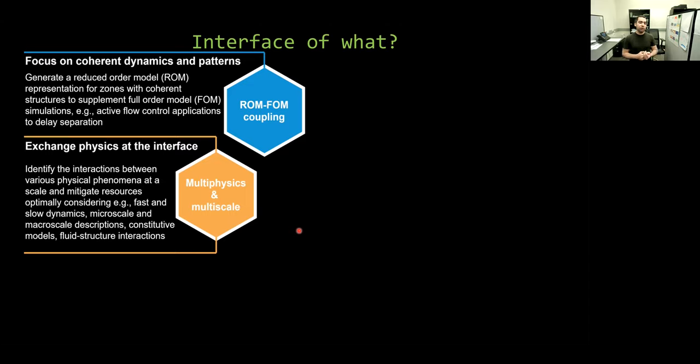The first is ROM-FOM coupling. As I mentioned, we might be working on different components or scales or physics. And among these, if we observe that there is a pattern or a coherent structure that repeats itself or dominates the dynamics in this part, we realize that there is room for model order reduction to reduce the computational cost in this part. Then we can reserve our computing resources for full-order models in other parts. So at the end of the day, the reduced-order model or ROM and the full-order model or FOM will need to share some information and communicate.